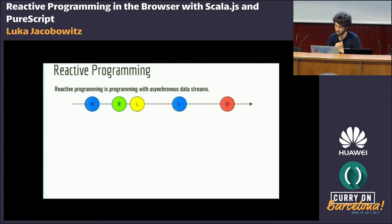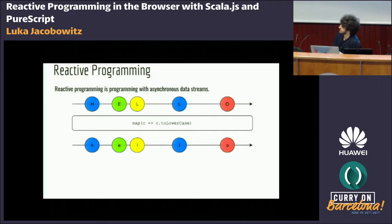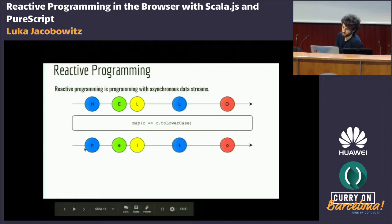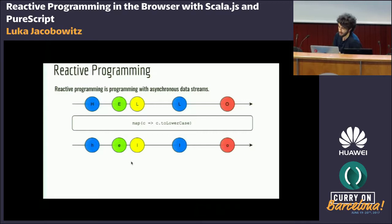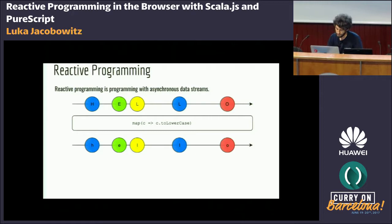These values over time aren't inherently useful by themselves, but we can leverage some properties. First, streams are usually functors, meaning we can map over them. We get a whole new stream that emits all the items we emitted before but with a function applied — for example, converting to lowercase. So we get another stream which also emits 'hello', but this time in lowercase. Streams are also applicatives, which means you can combine many streams — so you can create a whole program by getting inputs as streams, combining and mapping them.